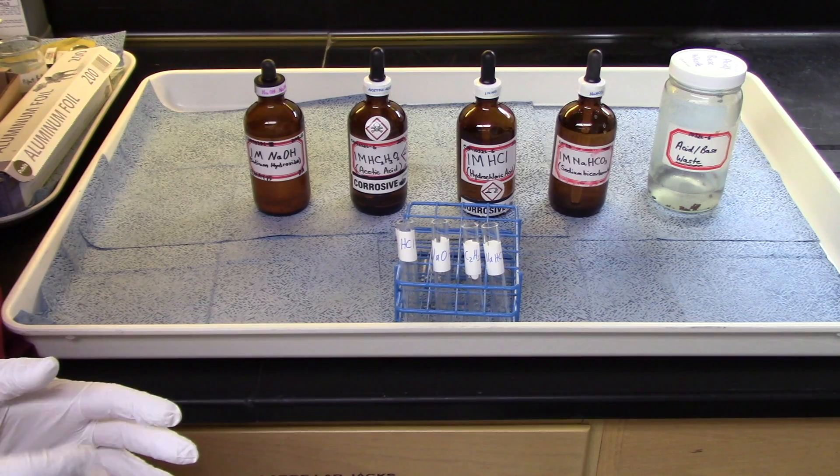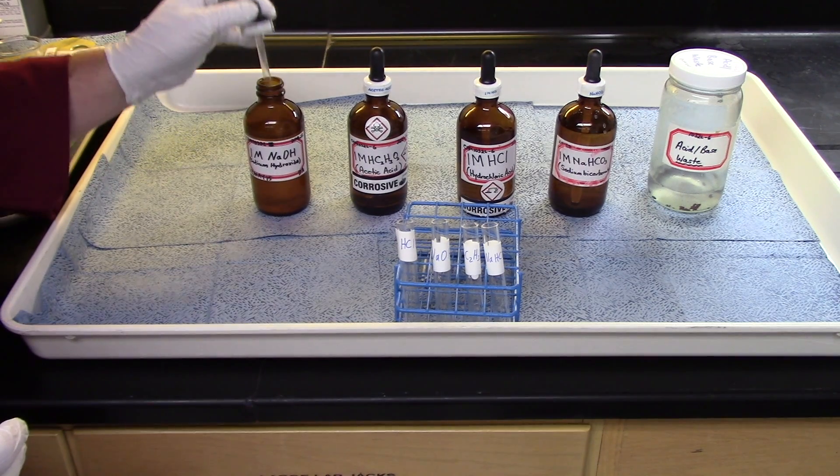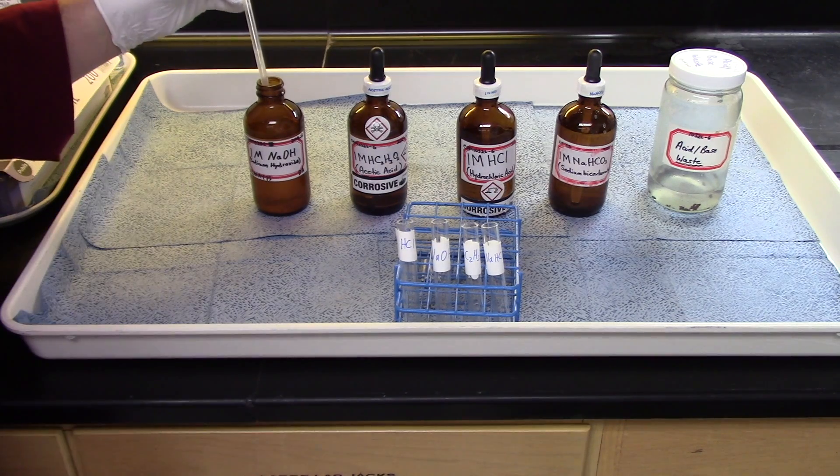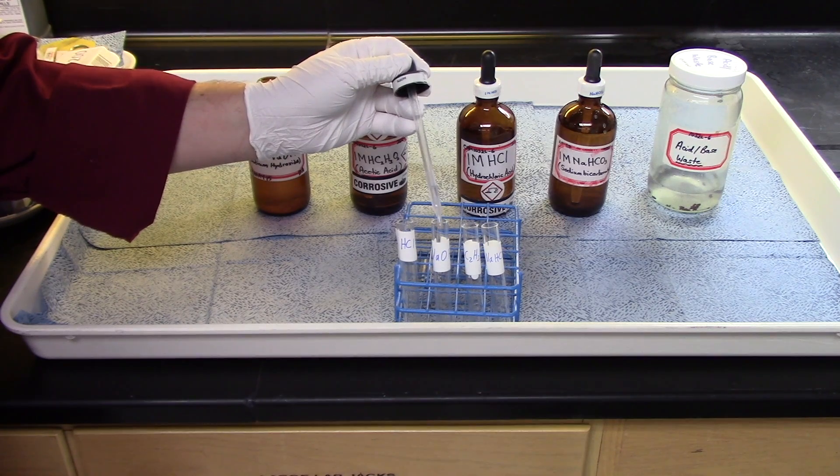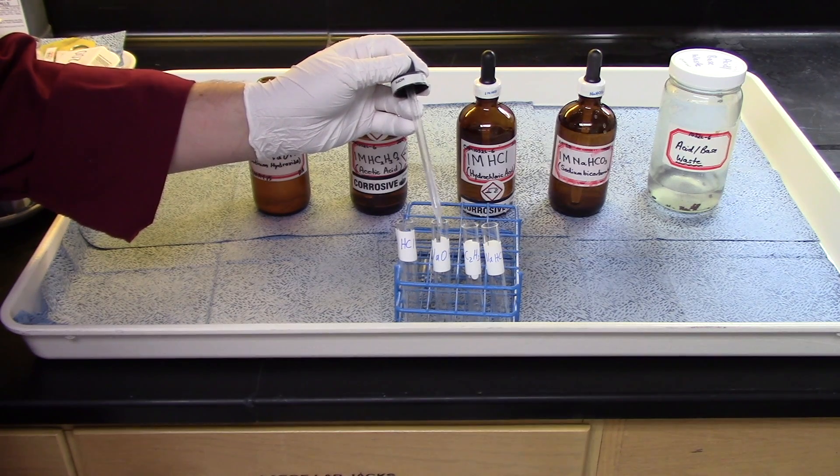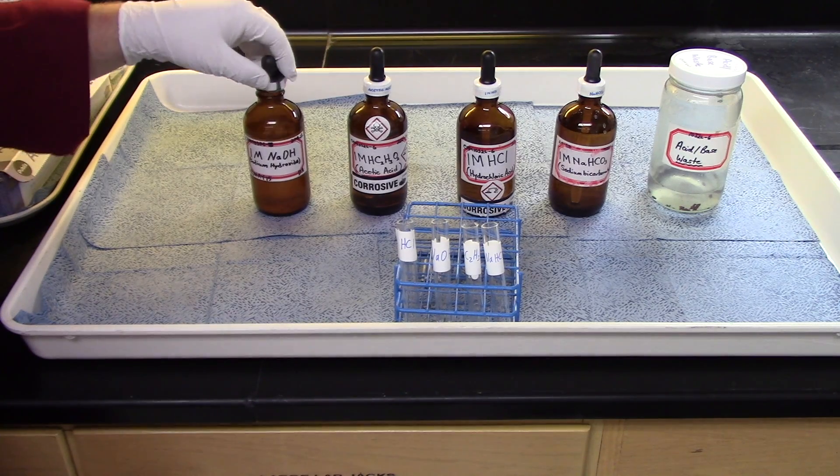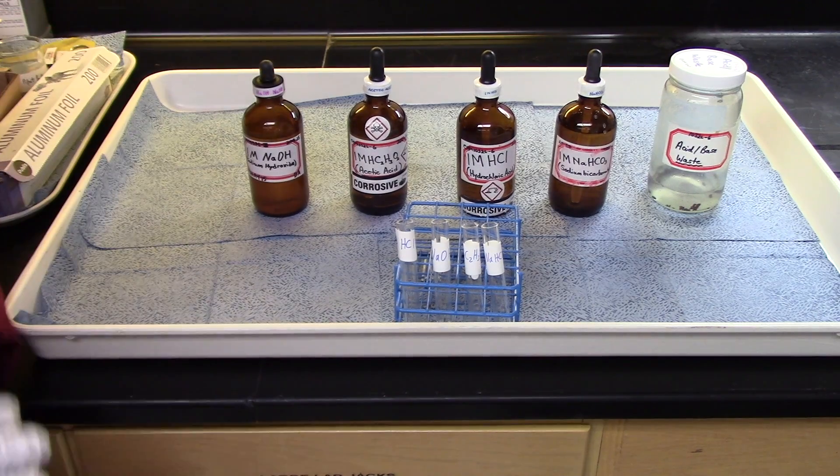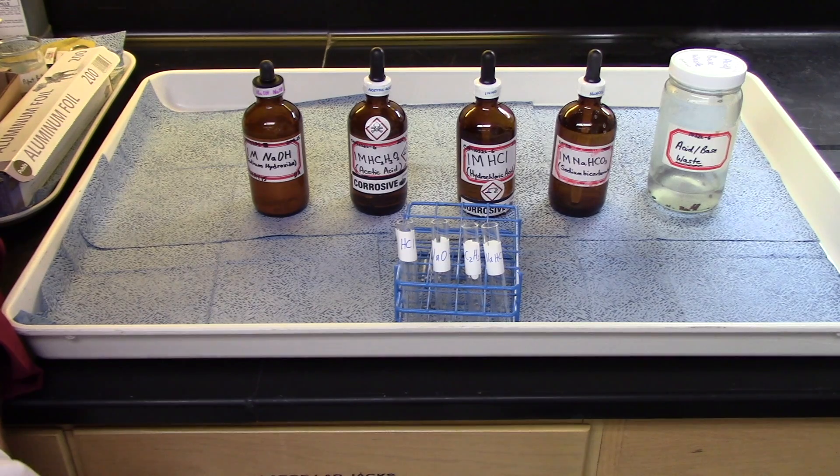Same as before, just take one of the dropper bottles and drop about ten drops into the test tube that's labeled, for example, NaOH, which is right here. One, two, three, four, five, six, seven, eight, nine, ten. One for good measure. It doesn't matter if you have ten, eleven, even nine. That's not really critical. As long as you have, you know, somewhere around ten, it'll be fine. Do that for all the reagents, and then take them back to your bench for experimentation.